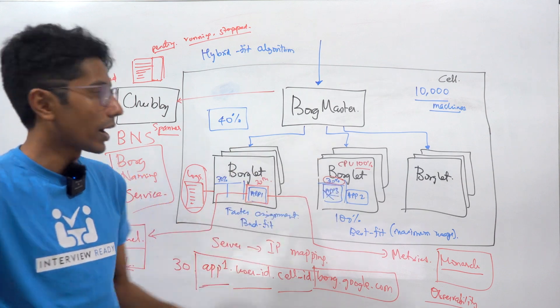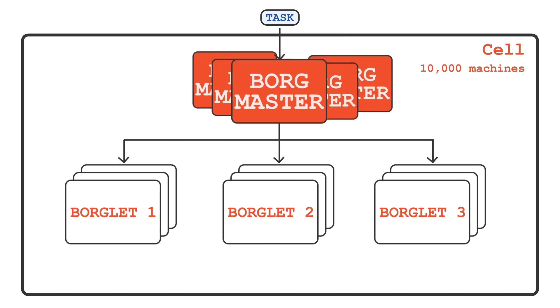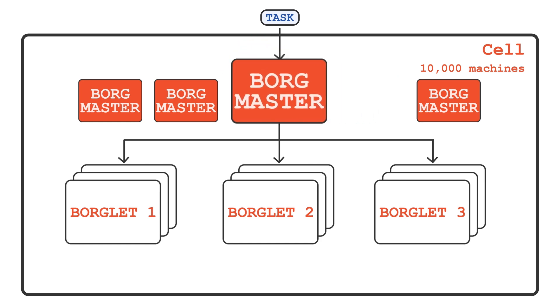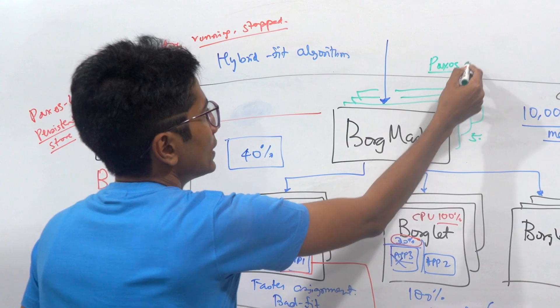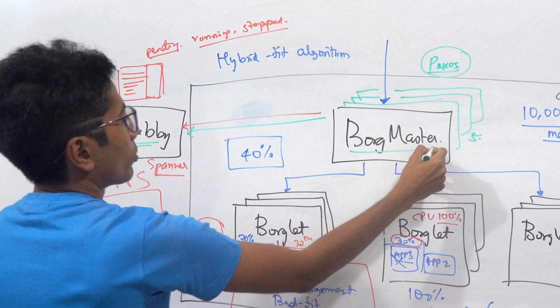Now you might be wondering what happens if Borg master dies. Yes, Borglets continue functioning, but one issue is if it dies then no new task can come in. So it's important not to let it die. And you have basically replicas of Borg master. So these are in-memory replicas, and there are five of these. They have leader election using Paxos. What happens is since they are in sync, in case one Borg master dies then another is elected, and then it takes care of the provisioning here with the Borglets. This is mostly taken care of again by Chubby, which stores all the state of the Borg master.